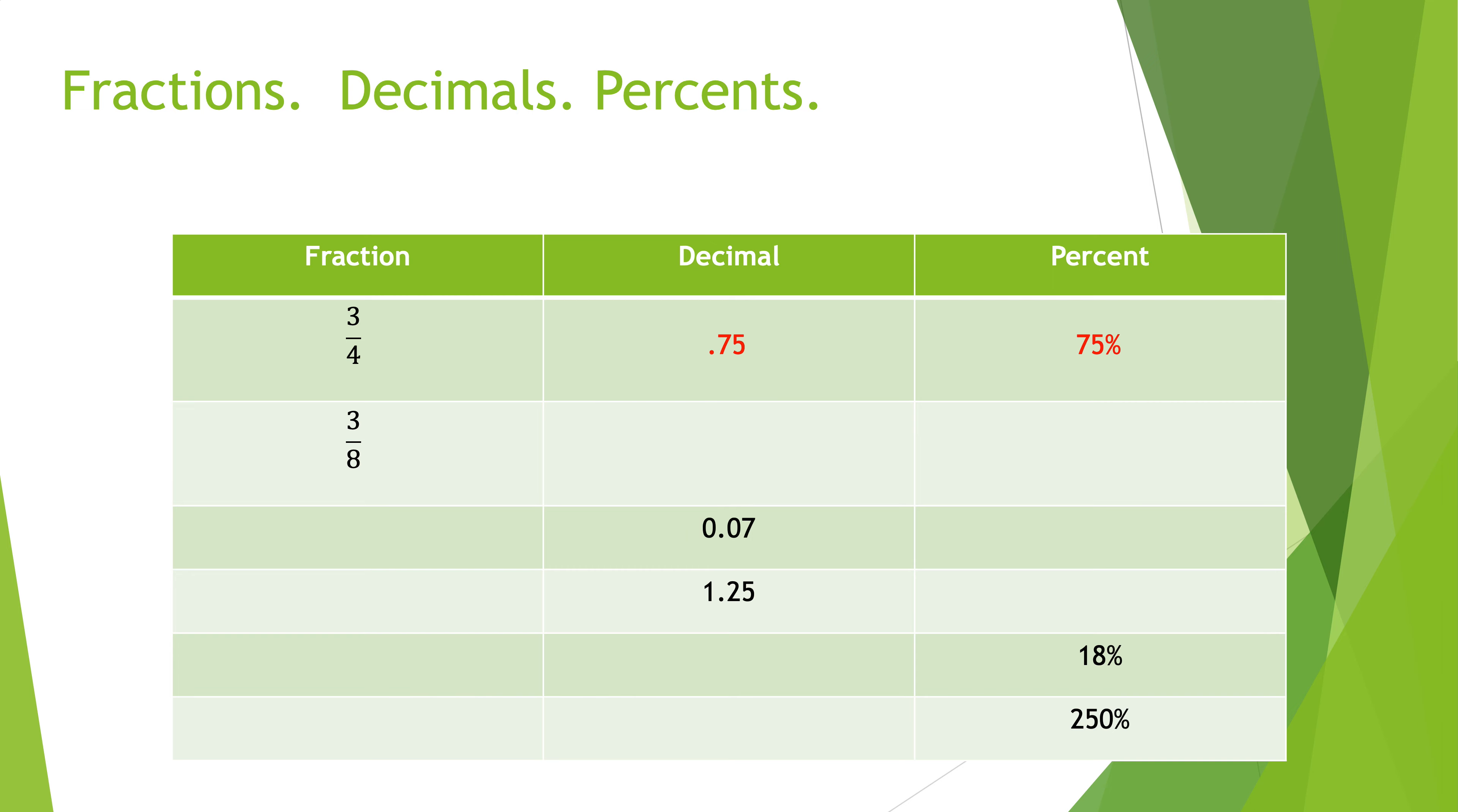If you take your calculator and do three divided by eight, you're going to get 0.375. This is a really important example because some people don't focus very much when you say move the decimal two places to the right, and they just see, oh, it started 0.75, it ended 75%. I just move it to the end, and that's not what was said. What was said was to move it two places to the right. So I only moved two decimal places. It doesn't make it all the way to the end. It's 37.5%.